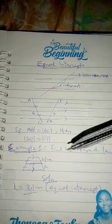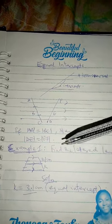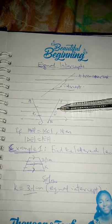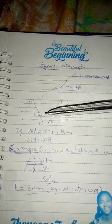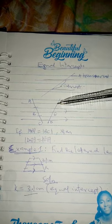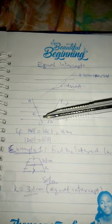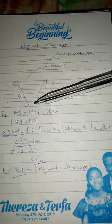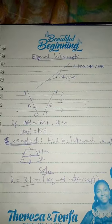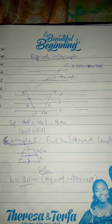That will run over them. So, this is another transversal running over them. Since AB equals BC, automatically DE will be equal to EF. That is what this topic is all about. Very simple.